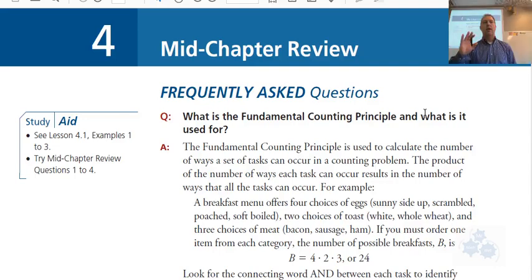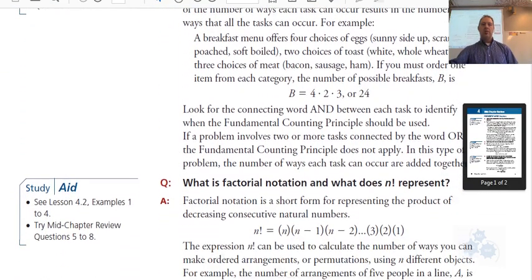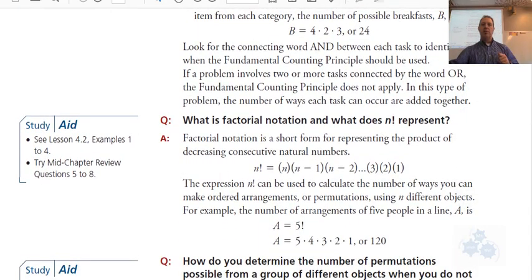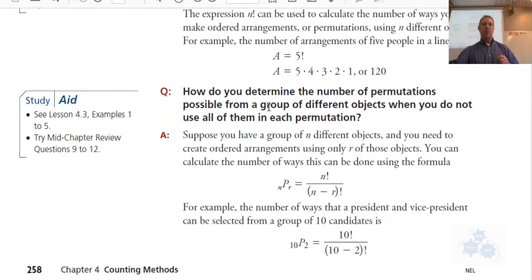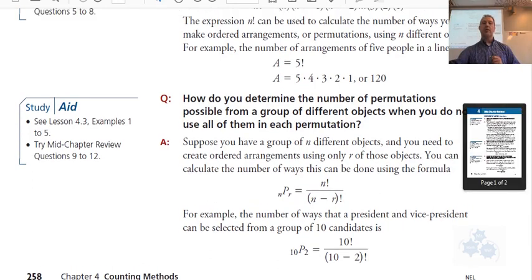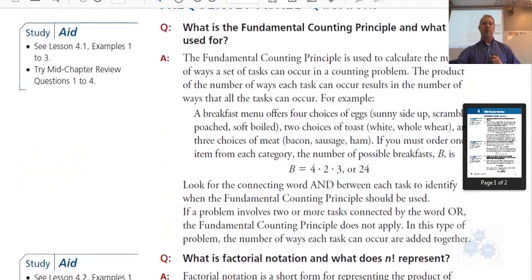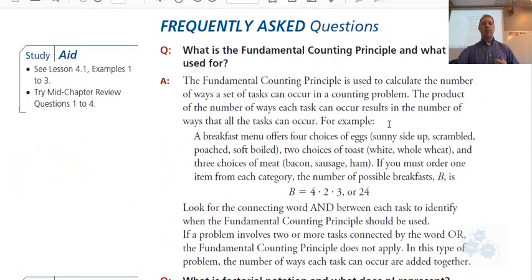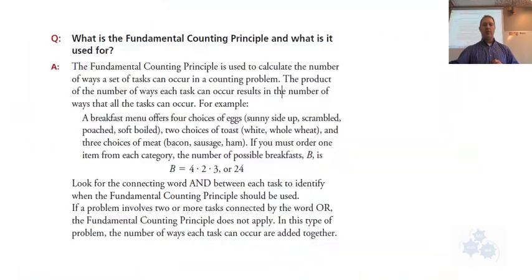As we look forward to the mid-unit quiz, we have 4.1 to 4.3. We're talking about fundamental counting principle, factorial notation, and permutations with different objects and conditions and restrictions. Those are the three things that we're covering in this quiz coming up tomorrow. Here's your little review that we're going to go over.